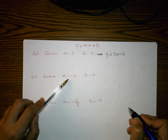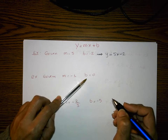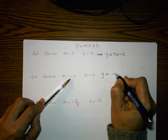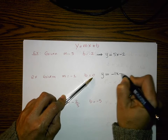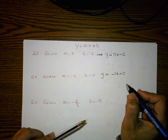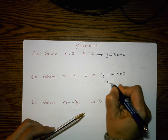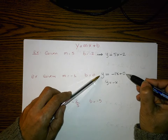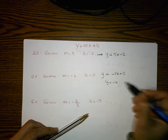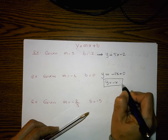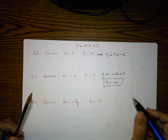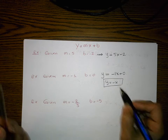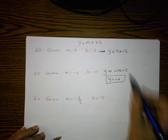Let's do it one more time. Given the slope is negative one and b equals zero, my equation is y equals negative one times x plus zero. We can clean this up: we write y equals negative x, and I don't have to write the plus zero. This is correct, but this is the cleaner, more elegant version.